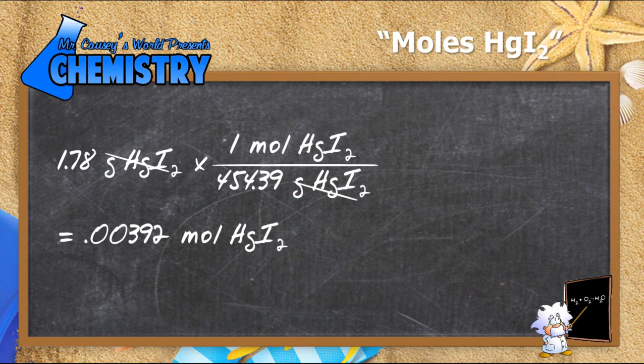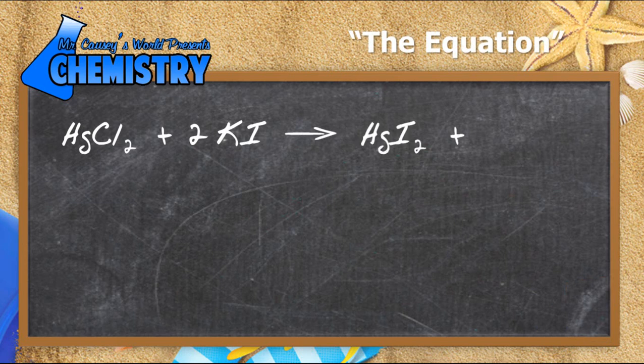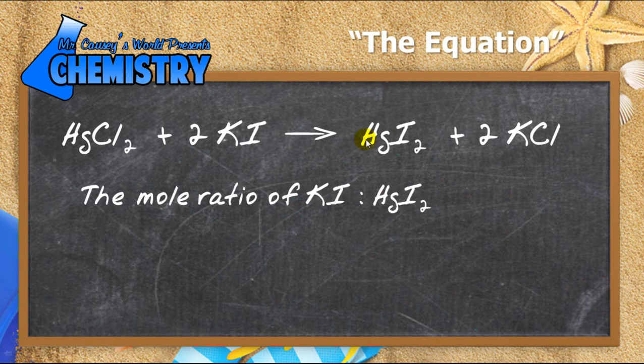In order to change this to moles of potassium iodide, I need an equation. I found the equation for the preparation of mercury-2 iodide in one of my textbooks — it's written right there on the blackboard. With that, I realize that my mole ratio is going to be 2 to 1.